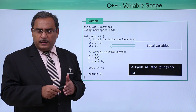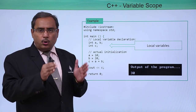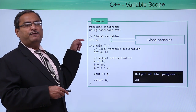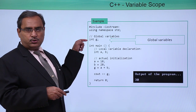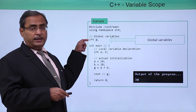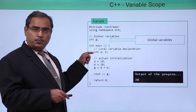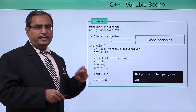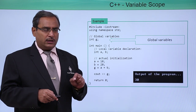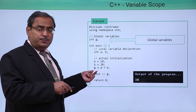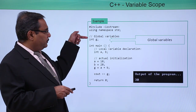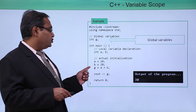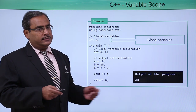Here the output will be 30. In this case, g has been defined before the main function, so it is under the global scope for this main function — that is why it is known as a global variable. Under the local scope we have defined a and b. Can I access a and b within the main function? Yes, because they are defined within the local scope. Can I access g within this main function? Yes, because from where g is defined, all functions defined afterwards can access g. So, g equals a plus b, and in this way the output will come as 30.